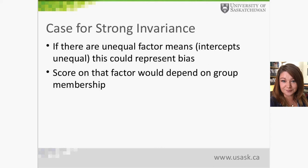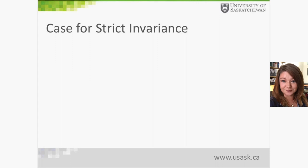If strong invariance is not established, it could mean that a score on a factor — for example, negative affect — could depend on whether you are English or French speaking, i.e., depending on group membership, which is a problem. Establishing strong invariance makes the case that there is no systematic response bias, and it is really needed if you want to compare the means on these latent variables — positive affect or negative affect — across groups. Others have argued that strict invariance is also really needed.